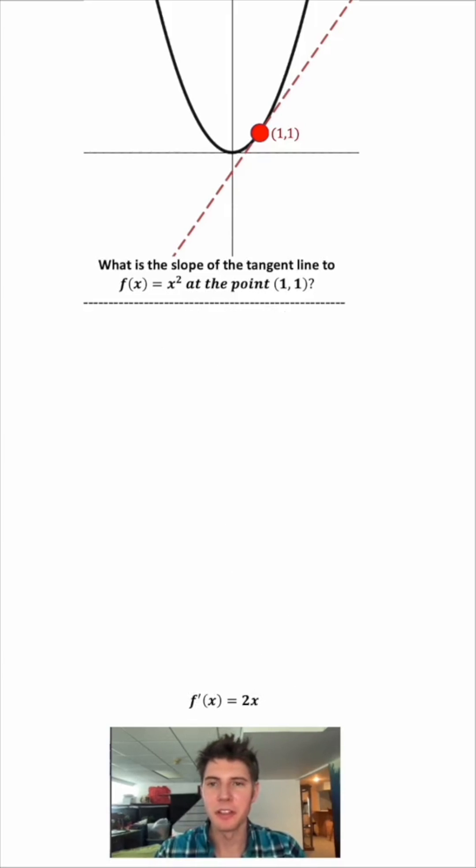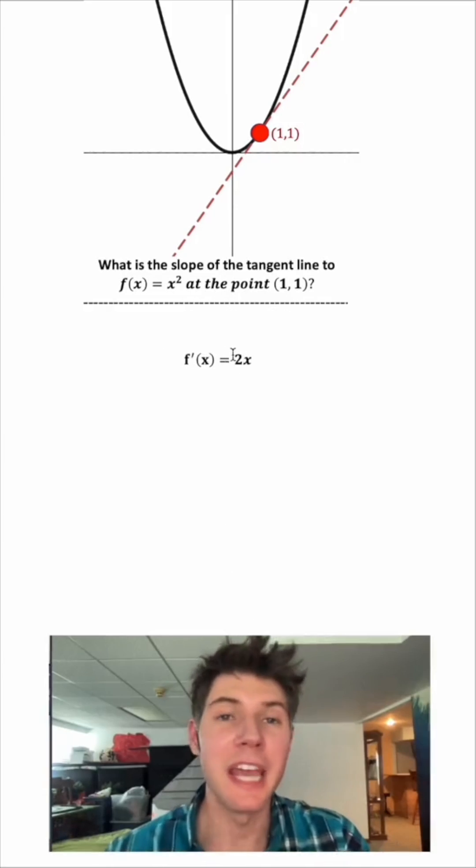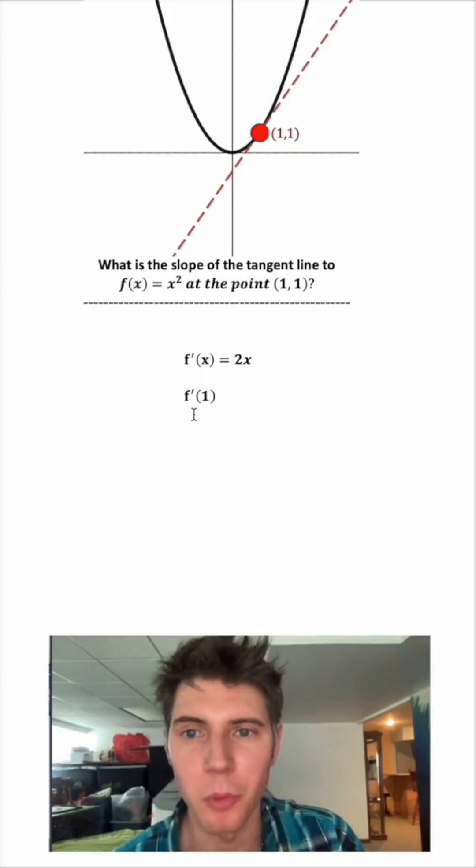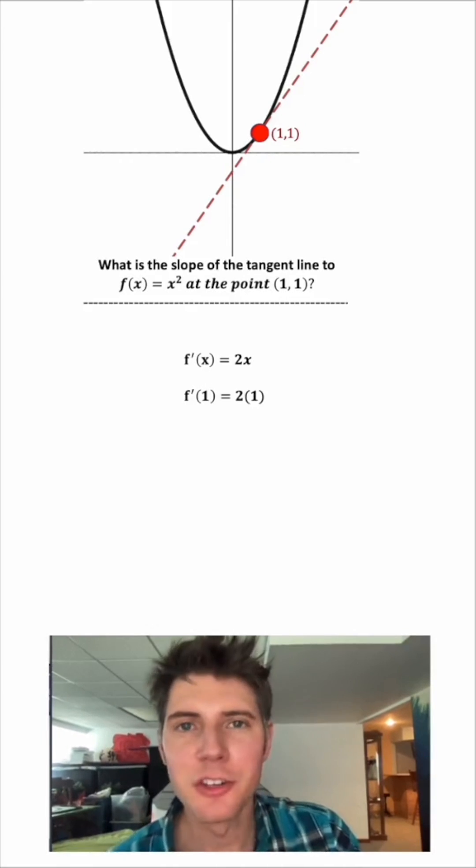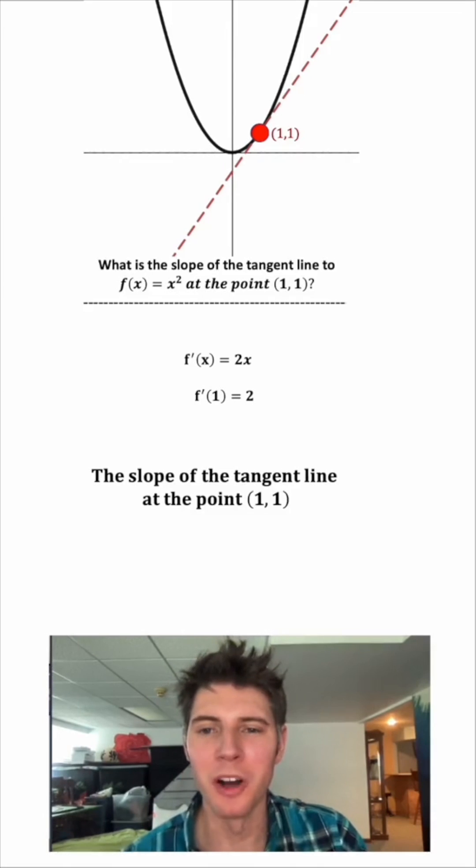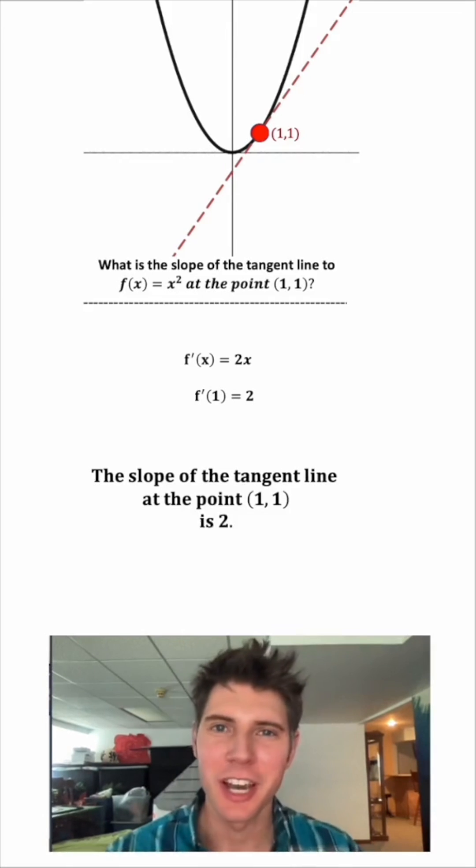Let's get rid of all this stuff. We'll bring this up here. This says the slope at any point x is equal to 2x. We want it specifically at the point 1. So we're going to find f prime of 1. So all we have to do is plug in 1 for the x. And 2 times 1 is 2. So the slope of the tangent line at the point 1, 1 is 2. And we just did your first calculus problem.